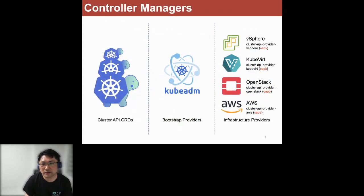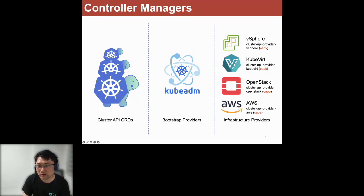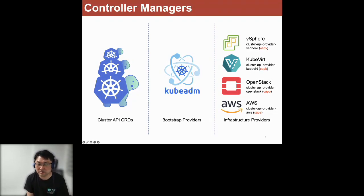There are a set of infrastructure providers to help the Cluster API spawn the infrastructure — it can be bare-metal or VMs. In the community, the most common providers are OpenStack, vSphere, or AWS. Recently, the KubeVirt community also introduced another provider called the Cluster API Provider KubeVirt, which I call CAPK. With CAPK, we can provision and manage Kubernetes over KubeVirt.